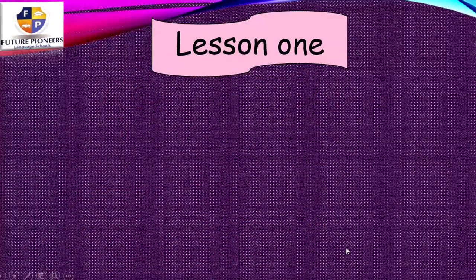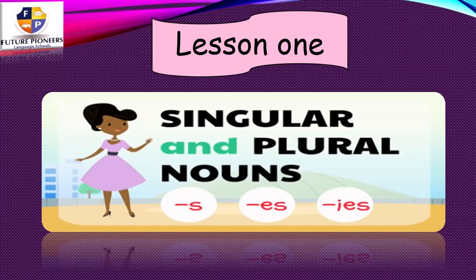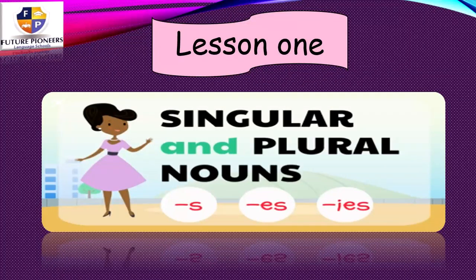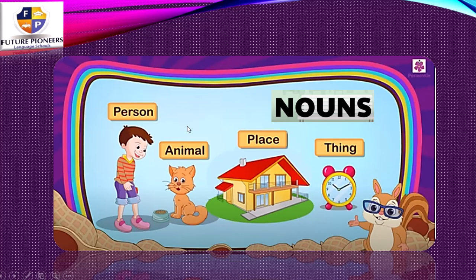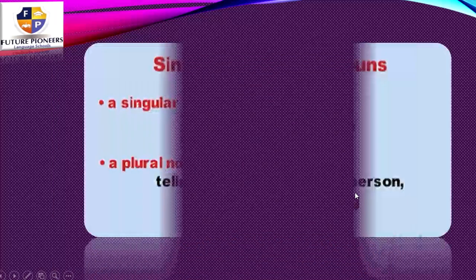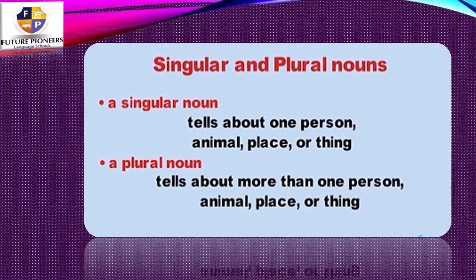Let's go to the first slide we have. First, we have to know the difference between the singular and the plural noun. To turn any singular noun to be a plural noun, you have to add S or ES or IES. Nouns can be a person, animal, place, or thing. Singular noun tells about one person, one animal, one place, or one thing. But the plural noun tells about more than one person, animal, place, or thing.